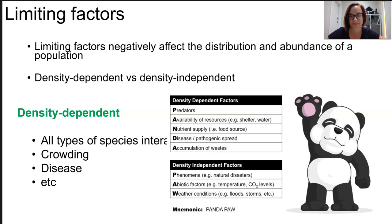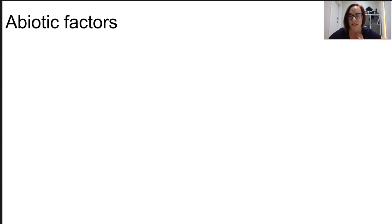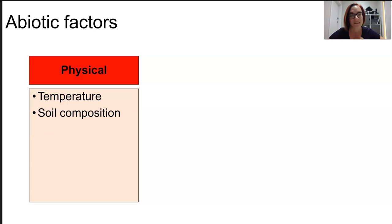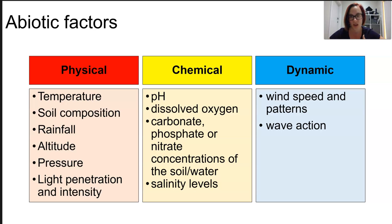Now generally speaking our limiting factors which are density dependent are biotic and our density independent factors are abiotic. Here's a nice panda to help you learn that. So limiting factors which are abiotic are generally our density independent. We have seen these before. They should be very familiar to you in terms of abiotic factors in an ecosystem.